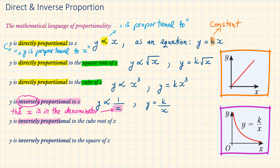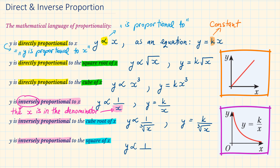Y is inversely proportional to the cube root of X. So we have Y, the symbol of proportionality, and 1 over cube root of X. As an equation: Y equals K over cube root of X. Y is inversely proportional to the square of X — Y, the symbol of proportionality, and 1 over X squared. As an equation, we have Y equals K over X squared.